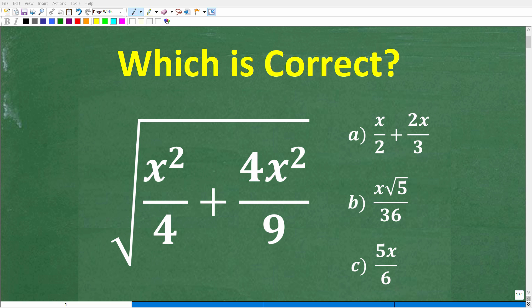Okay, so let's see if you have the algebra skills to answer this question. Now the question is, we're going to take the square root of x squared over 4 plus 4x squared over 9. Now this is a multiple choice question. So A is x over 2 plus 2x over 3.